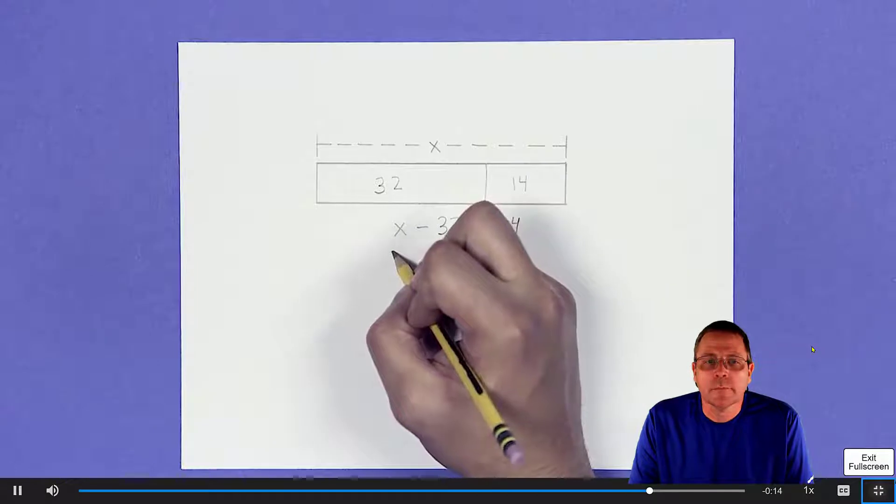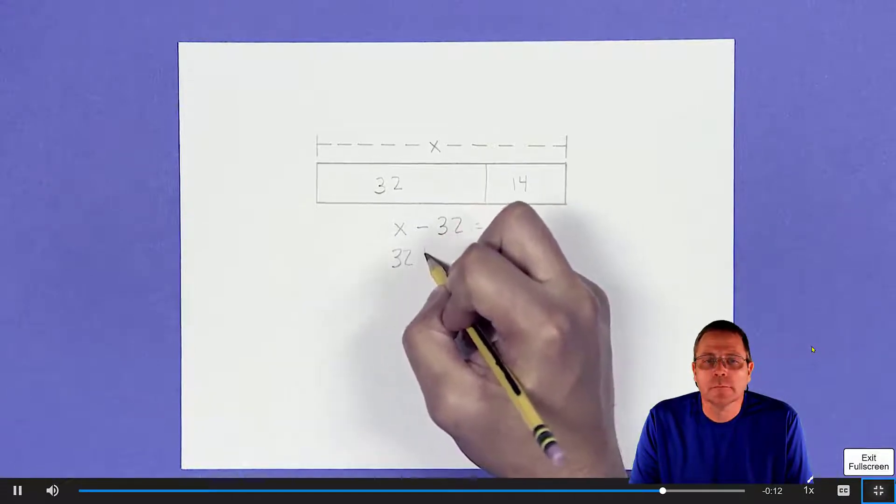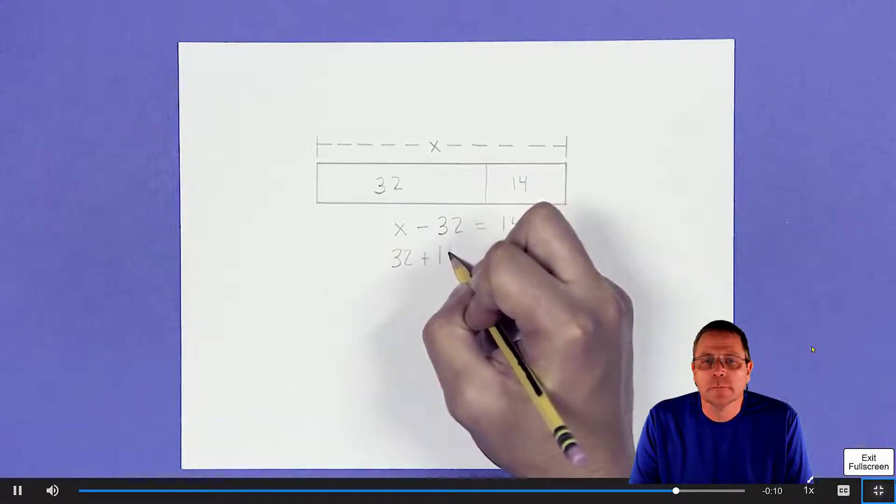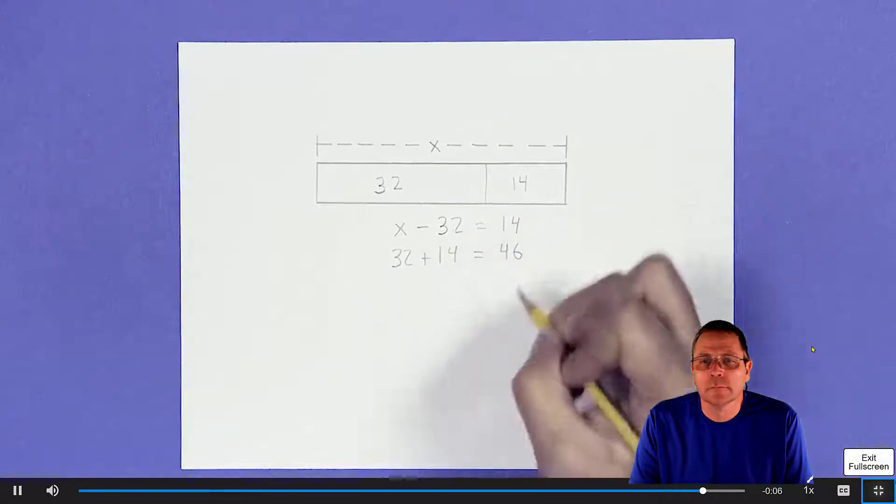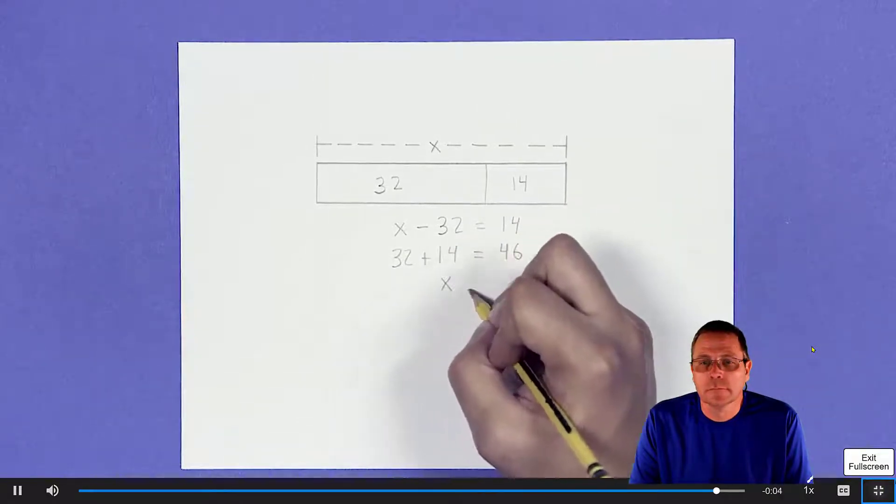Work backward to solve the equation. Write the equation as an addition sentence and solve. 32 plus 14 equals 46. That means x equals 46.